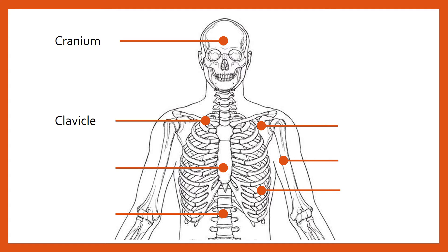The collarbone — the proper name for the collarbone is the clavicle — and we have one on either side of the body. The clavicle along with the scapula make up what we call the shoulder girdle. All these bones have various different kinds of insertions for muscles, which we'll look at in a different video.